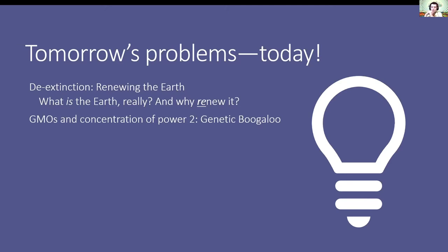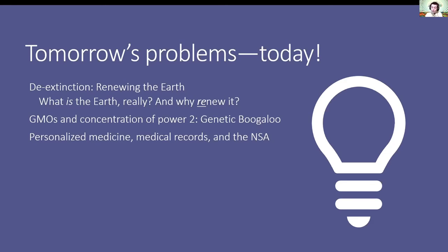GMOs and concentration of power are major concerns. In the future, there may be a vast democratization process where people can start making microbes on their kitchen table — potentially making their own insulin from yeast, but also possibly creating a new variant of smallpox. Concentration of power is really, really hard. If we can develop personalized medicine, we can develop personalized pathogens, which is a potential tool that law enforcement will want.